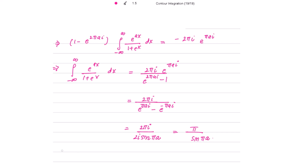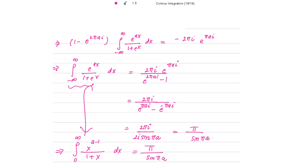Finally, substituting back to the original variable x (recalling we set x = e^t earlier), the integral from 0 to infinity of x^(a−1) / (1+x) dx = π / sin(aπ). This completes the proof. Thank you for watching — please like and subscribe for the latest videos.